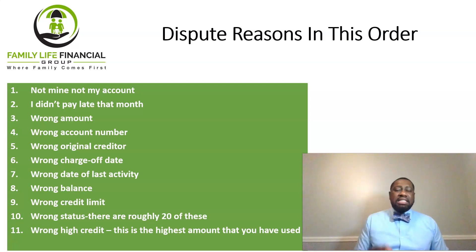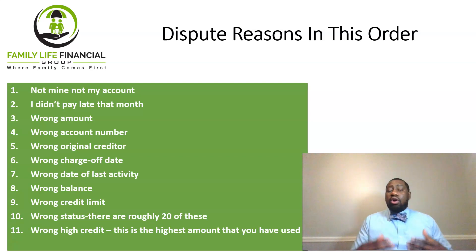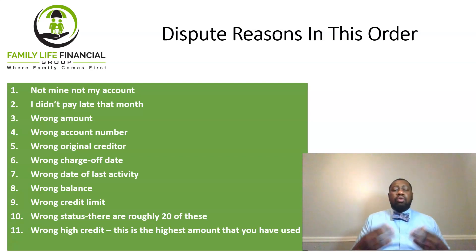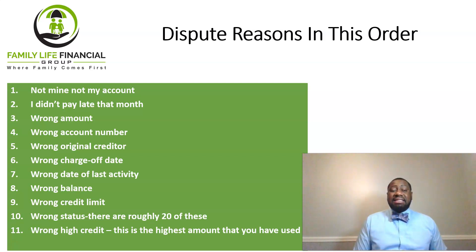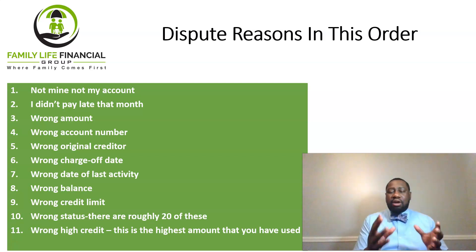We start with 'not mine,' 'not my account,' 'I didn't pay late that month,' wrong amount, wrong account number, wrong original creditor, wrong charge-off date, wrong date of last activity, wrong balance, wrong credit limit, and wrong status. There are roughly 20 of these dispute reasons in total.